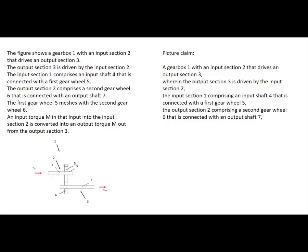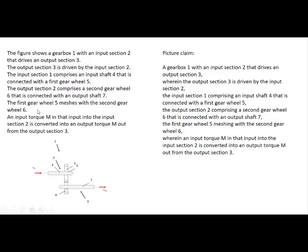The output section comprising a second gear wheel 6 that is connected with an output shaft 7. Next sentence: the first gear wheel 5 meshing with the second gear wheel 6. And wherein a functional feature: an input torque M in that is input into the input section 2 is converted into an output torque M out from the output section 3. This is our picture claim.